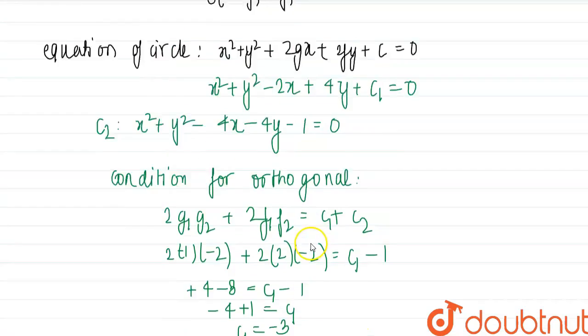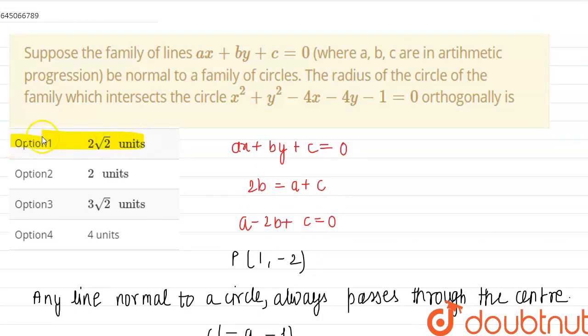So the radius of the circle is 2 root 2. So now we can check our options. So option 1, 2 root 2 is the correct answer. Thank you.